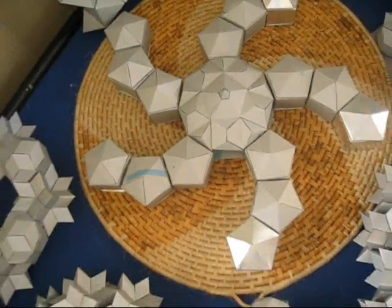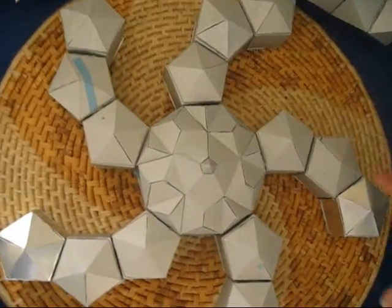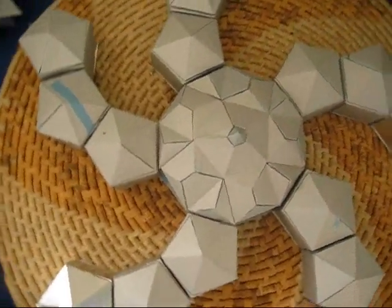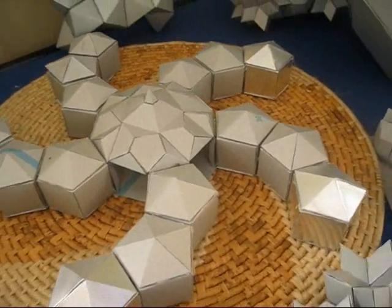This is modeling the galaxy from a plan view looking down on the Milky Way. That's basically what you'd see. Here's the central sun, as it were. And the spiraling arms. Same structure. Fractally small.